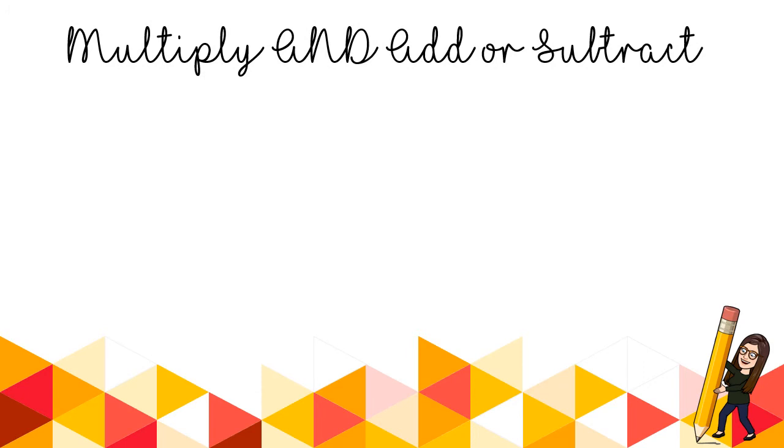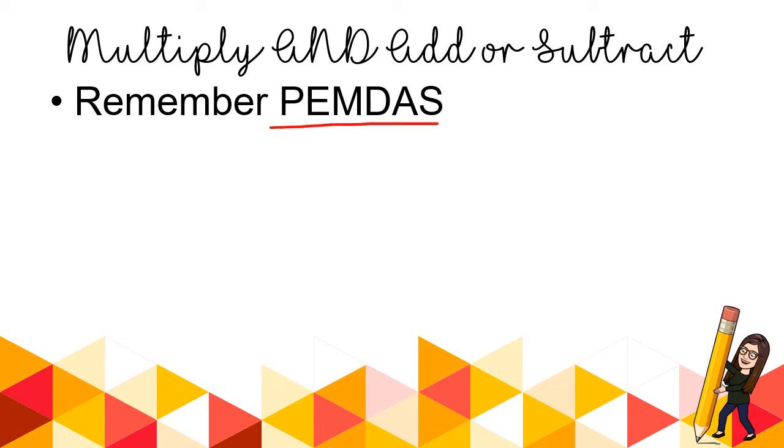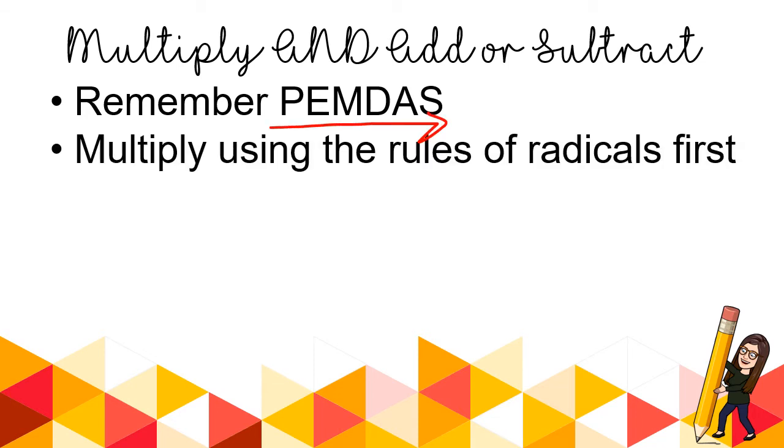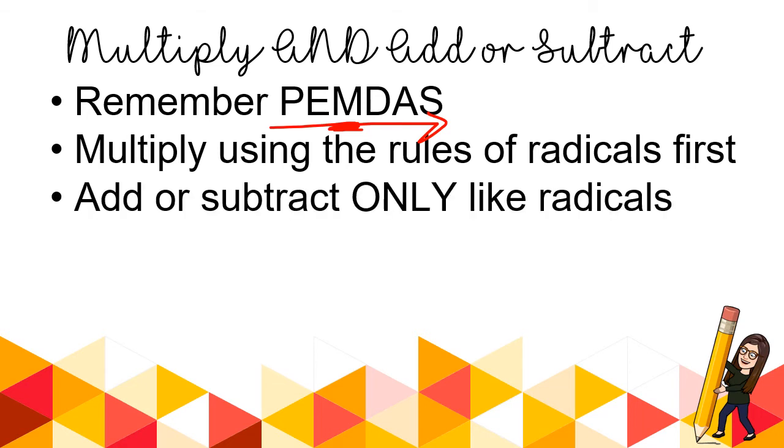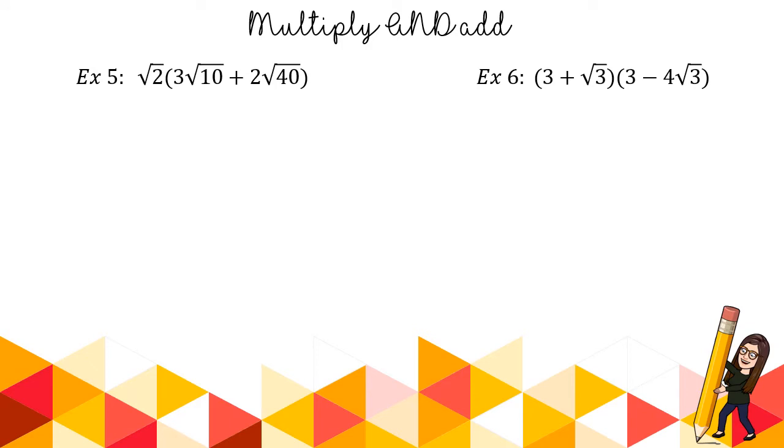Alright, let's take a look. This is going to be a combination of our operations of multiplying and adding or subtracting. So if you need work on multiplication, see my other videos. First thing is always remember PEMDAS. In what order do I simplify? PEMDAS. So my suggestion is to multiply first because M comes first. Multiply using the rules of radicals. Then add or subtract only the like radicals. So that's today's lesson.